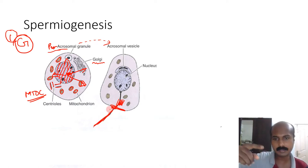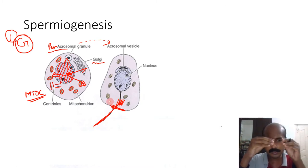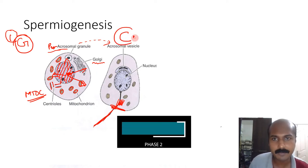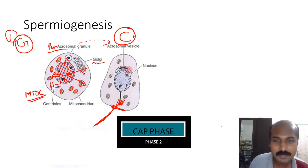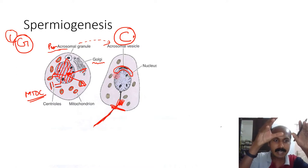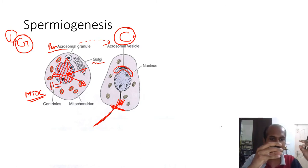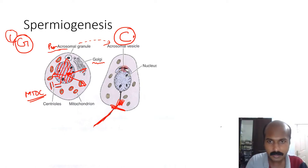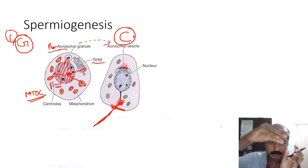The axonemal complex grows through polymerization: tubulin molecules arrange together, forming a long tail that projects outward. This phase is called the cap phase because the acrosome slowly forms a cap around the nucleus — spreading out and flattening like a cap pasted over the anterior part of the nucleus.